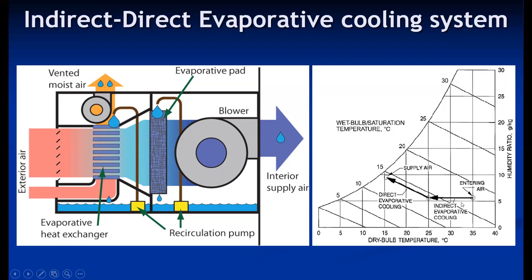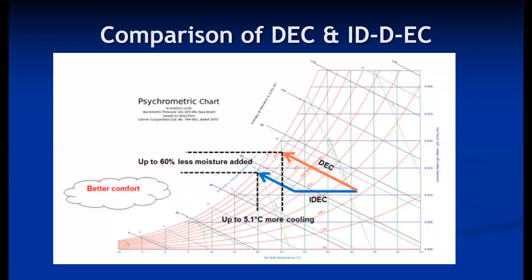Two psychrometric processes occur in the indirect-direct system: sensible cooling followed by cooling and humidification. Comparing with direct evaporative cooling alone, the indirect-direct system results in approximately 60 percent less moisture addition and about 5.1 degrees Celsius more temperature drop, providing better comfort conditions. This makes it a better option compared to direct evaporative cooling alone and even compared to a conventional package air conditioning system.